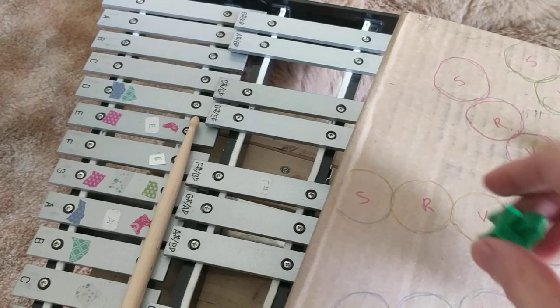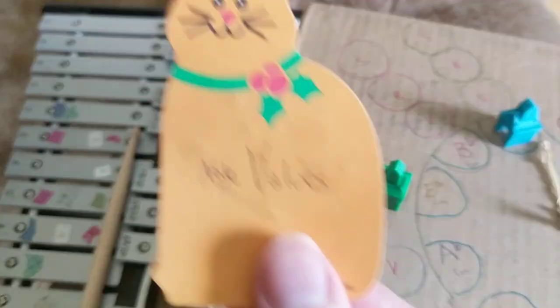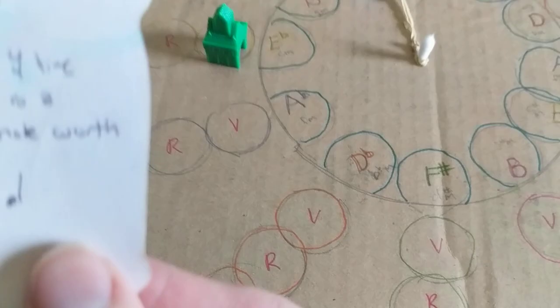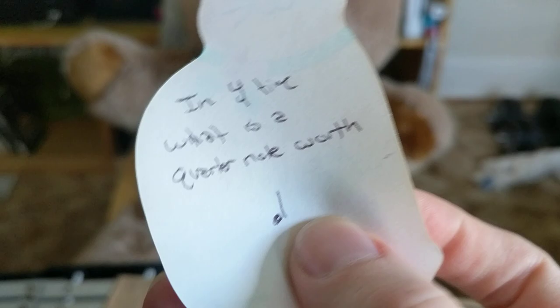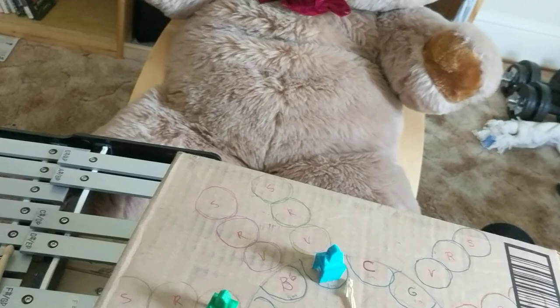So he gets to move out here. This is V, note values. So that means I'm going to ask the bear a note value question. I'm going to say, hey bear, you ready for this? I don't know if I'm ready. In 4-4 time, what is a quarter note worth? And I can show him the card, but I'm going to keep my thumb over the answer. A quarter note is worth one beat in 4-4 time. So let's say the bear says, yeah, yeah, it's worth one beat. He gets to move there.